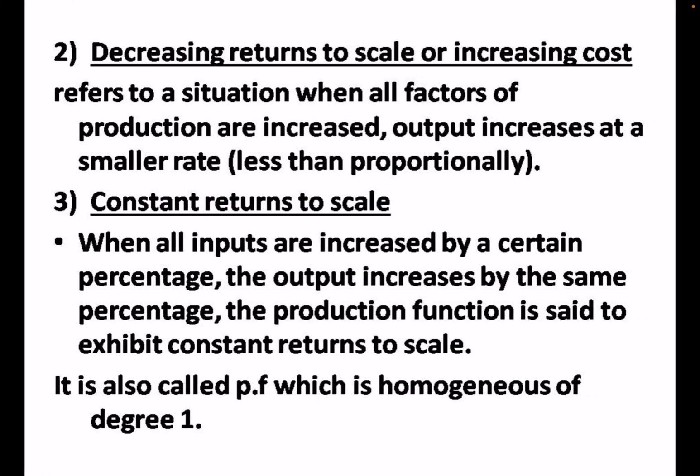Decreasing returns to scale is the situation where all factors increase but output increases at a smaller rate — less than proportionate increase. Constant returns to scale is where output increases at the same percentage as inputs — that is a proportionate increase — and the production function is homogeneous of degree 1.